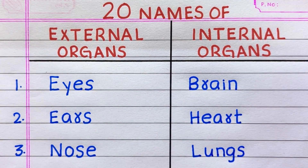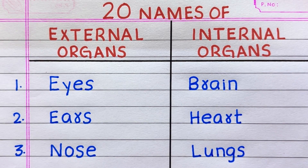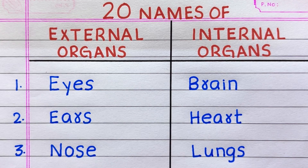The first external organ is eyes, second ears, third nose. The first internal organ is brain, second heart, third lungs.